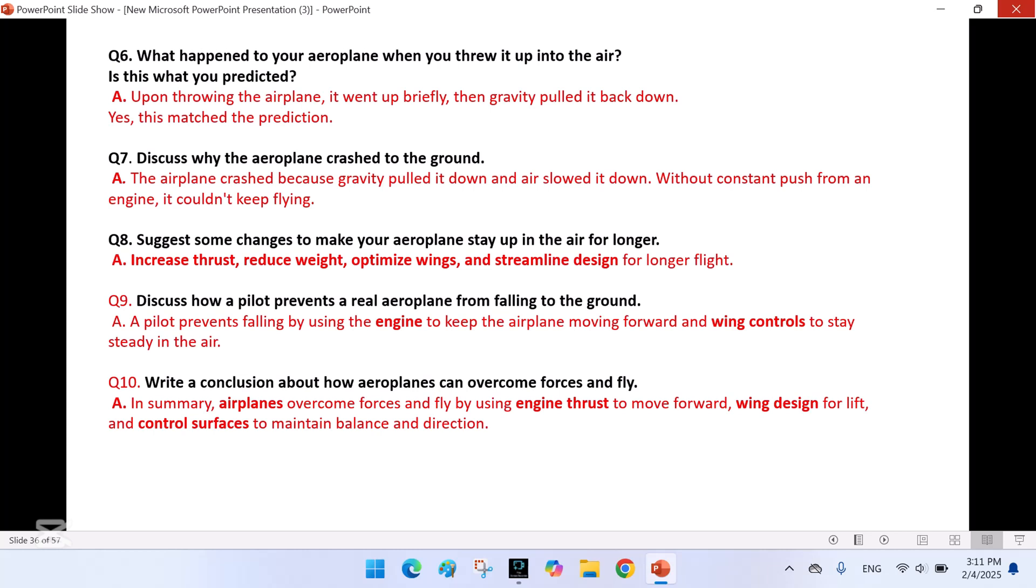Discuss how a pilot prevents a real aeroplane from falling to the ground. A pilot prevents falling by using the engine to keep the aeroplane moving forward and wing controls to stay steady in the air. In summary, airplanes overcome forces and fly by using engine thrust to move forward, wing design for lift, and control surfaces to maintain balance and direction.